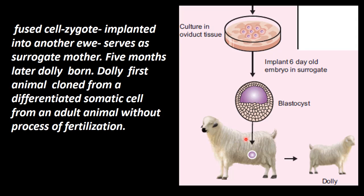This serves as a surrogate mother — a false mother. The embryo is from the somatic udder cells with the enucleated ovum nucleus. This is a surrogate mother. Five months later, the lamb is born and this is called Dolly. So Dolly is the first animal cloned from a differentiated somatic cell — that is, from the udder — from an adult animal without the process of fertilization. This is called animal cloning.